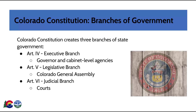Article V is the Legislative Branch, which includes the Colorado General Assembly, the body that passes laws applicable statewide. And Article VI is the Judicial Branch, which establishes the state court system and authorizes county courts.